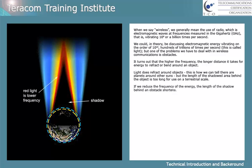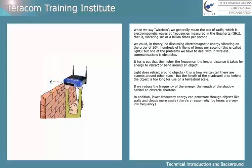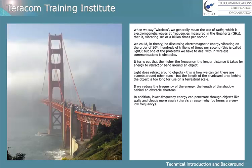But the length of the shadowed area behind an object is too long for use on a terrestrial scale. If we reduce the frequency of the energy, the length of the shadow behind an obstacle shortens. In addition, lower frequency energy can penetrate through objects like walls and clouds more easily. There's a reason why foghorns are very low frequency.